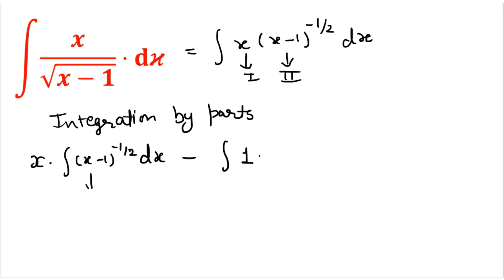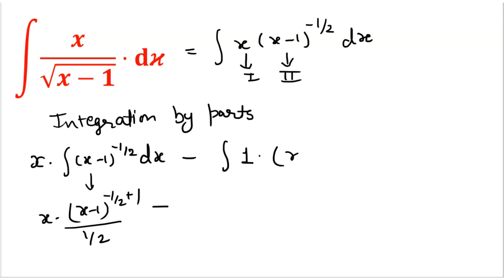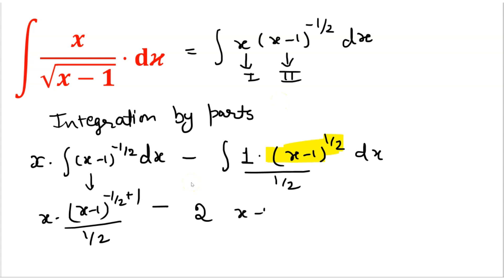We have solved the integration of the second function: x minus 1 raised to power minus 1 by 2, plus 1 over 1 by 2 into x minus 1. So the integration of the second part comes out as x minus 1 raised to power 1 by 2, with denominator 1 by 2 into dx.